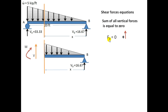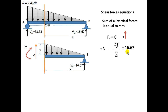Now I will write the shear force equation: sum of all vertical forces equals zero. Forces acting upward are taken as positive and downward as negative. V is acting upward — taken as positive. The UVL force is (X·Y)/2, acting downward — taken as negative. The reaction 16.67 is acting upward. These three forces act at the cut face.